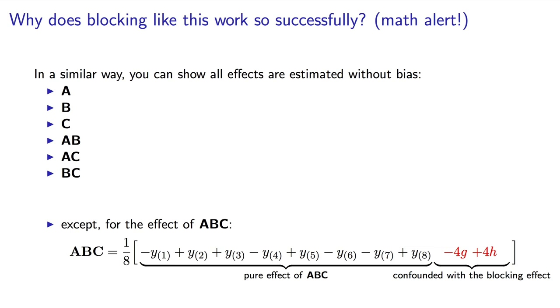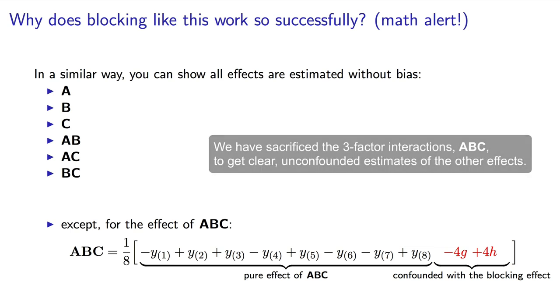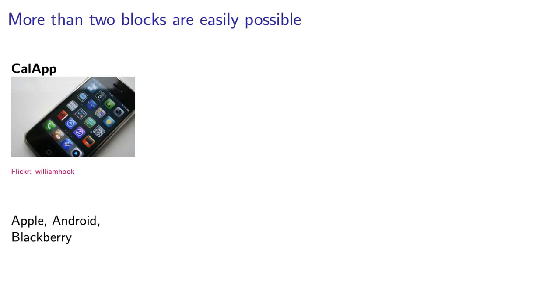In fact, the ABC three factor interaction is confounded with this D effect of the nuisance variable. That was intentional, and it is usually the best course of action in most cases. We often expect our three factor interaction to be negligible. So we have sacrificed our three factor interaction here, in order to minimize the effect that the nuisance variable has on our system.